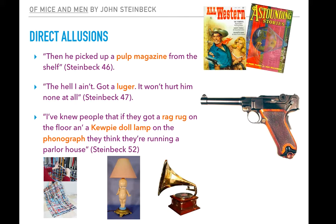If you didn't actually know what a Luger was, you wouldn't be able to picture what that gun looks like. The last example: 'I've known people that if they got a rag rug on the floor and a Kewpie doll lamp on the phonograph, they think they're running a parlor house.' In this example there are actually three allusions: a rag rug, made out of rags woven into a rug; a Kewpie doll lamp, which is the picture in the middle, with a toy doll attached to the lamp base; and a phonograph, one of the old original record players.